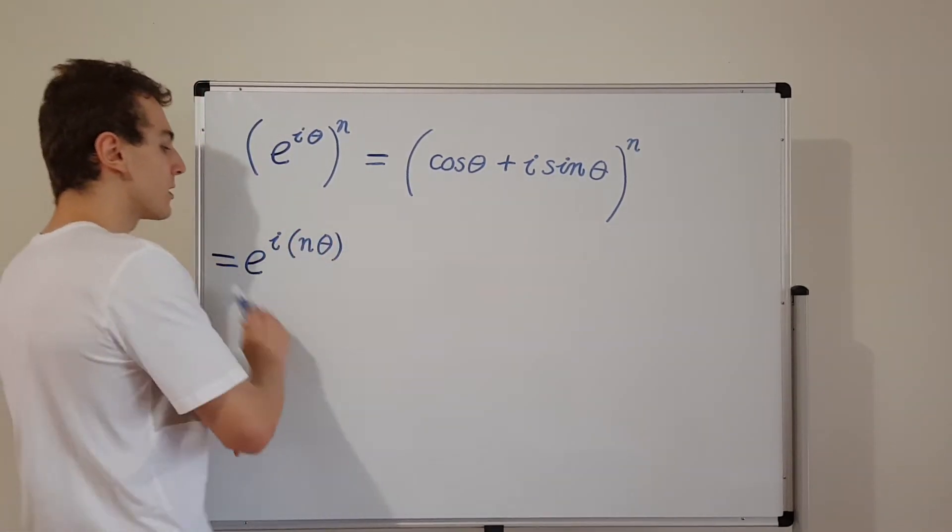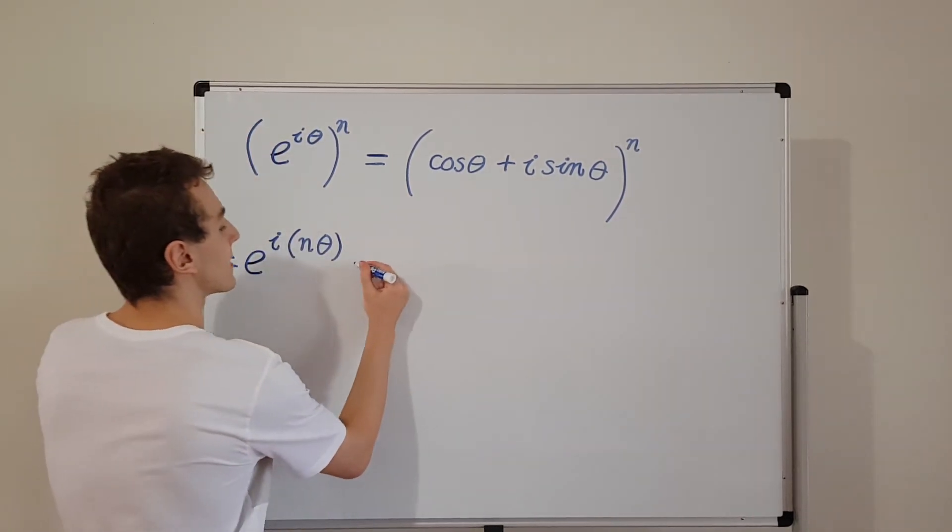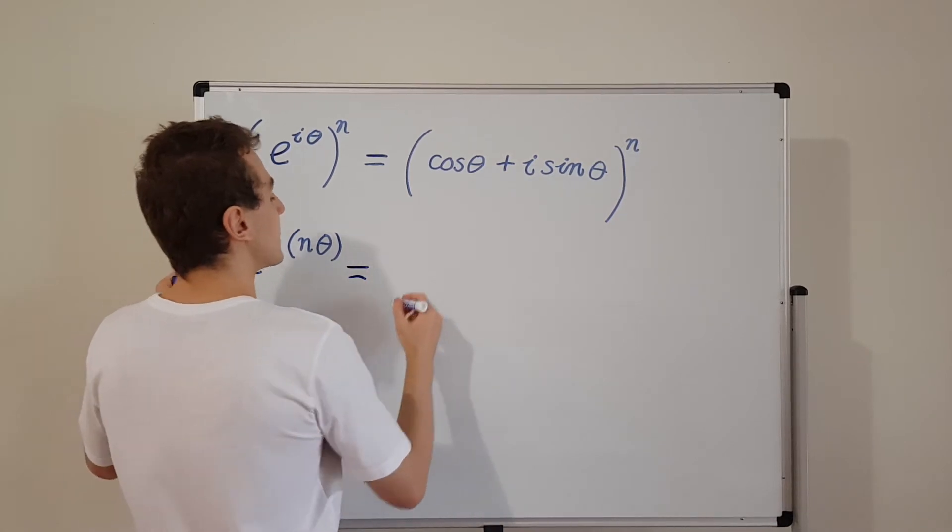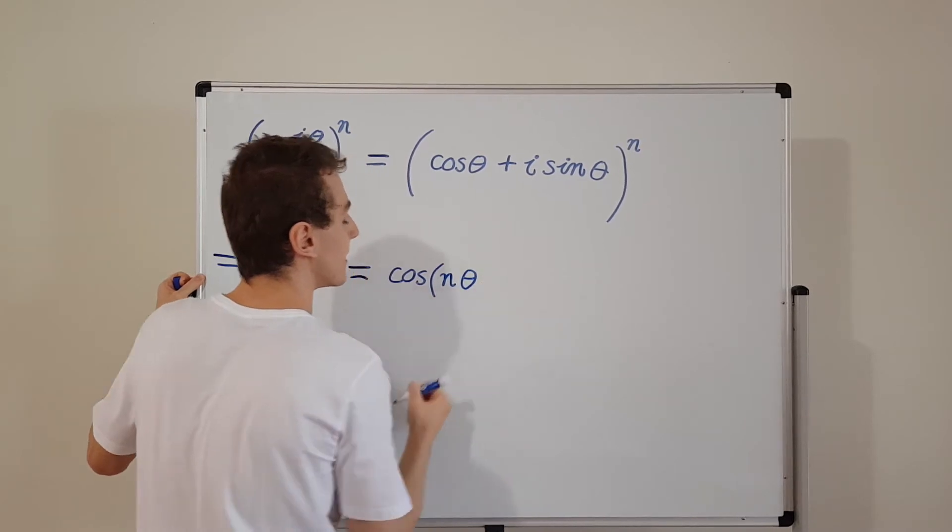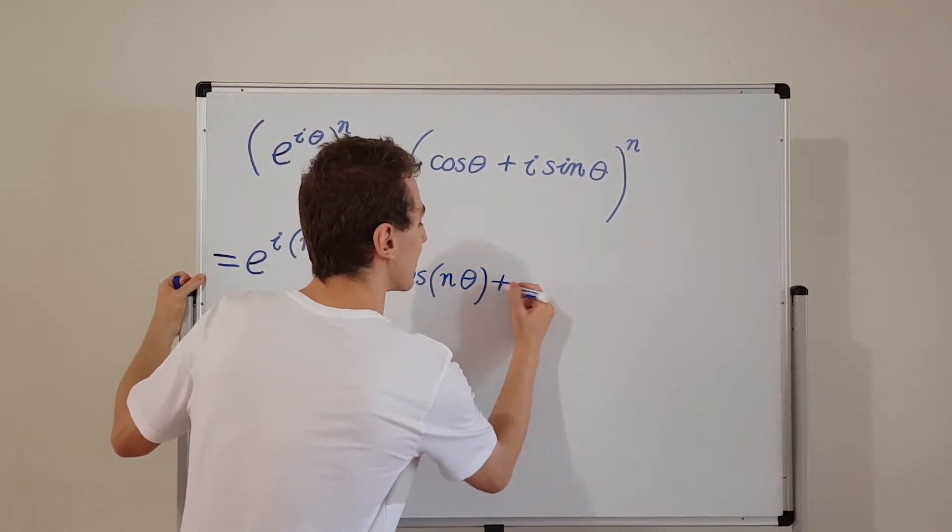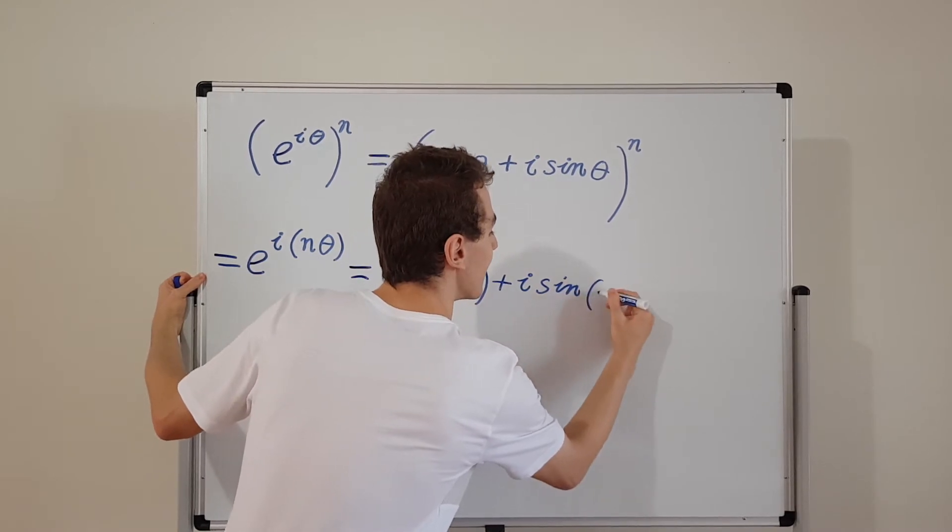So what can we do with this? Well, we can actually use Euler's formula to write this in an alternative way. So let's do that. We can write this as cosine of n theta and we also need a plus i sine n theta.